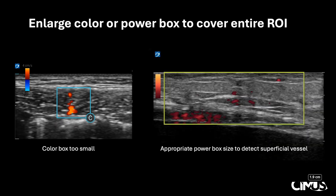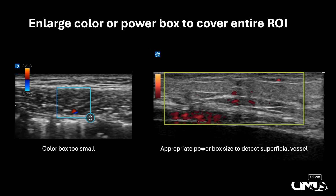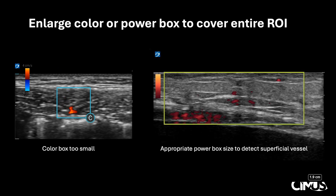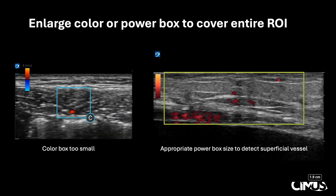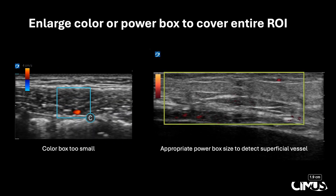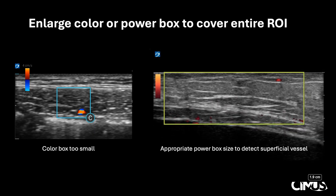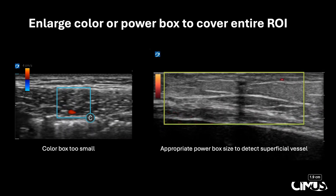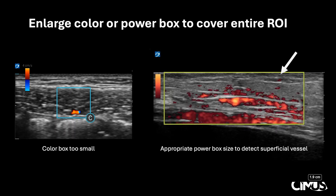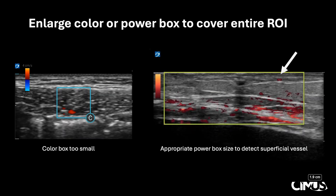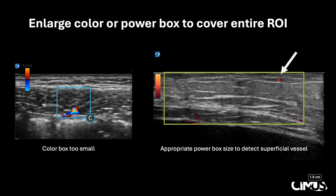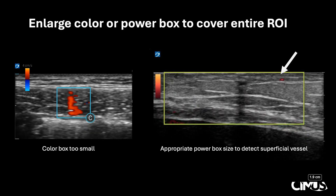Next, failure to adjust the color box can result in missed blood vessels. On the left, we see a color box that is too small. While it has picked up a vessel signal, it is only evaluating a small area of the tissue, with potential vessels in the superficial subcutaneous tissue or in the muscle lateral to the box that would be missed. The video on the right illustrates this point, with a small superficial vessel at the top right of the screen that is only seen as the box is covering all of the superficial structures. It is therefore important to enlarge the color or power box to cover the entire region of interest to avoid missing vessels.